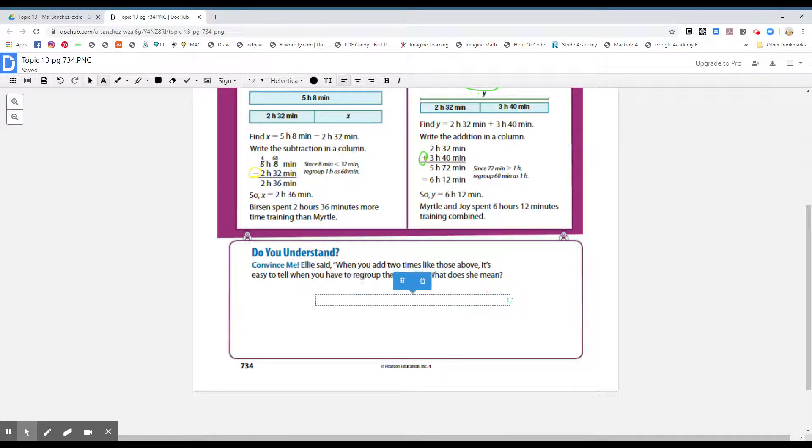Because what did we read, boys and girls, about the minutes? How do we know when to regroup the minutes? Because one hour is equivalent to how many minutes, boys and girls? 60. So whenever you regroup one hour, you have the 60. And here are the 72 minutes, you had enough to make another hour, so you subtracted the 60. So, complete sentence, please, boys and girls, and it says, Ellie means that for every 60 minutes is equal to one hour.